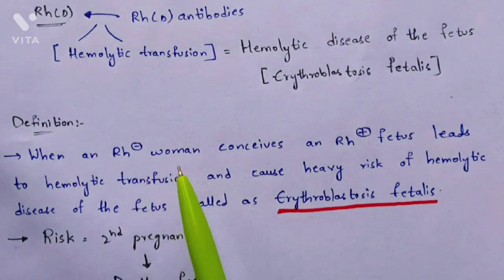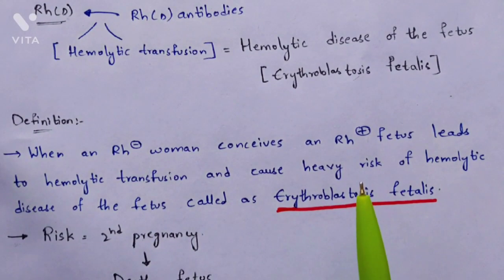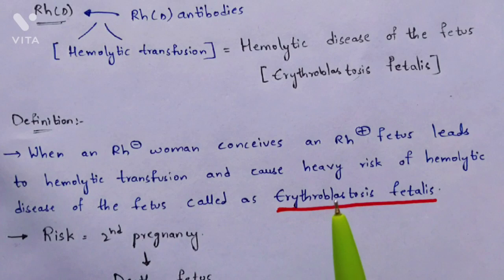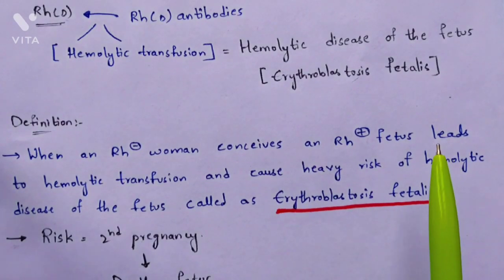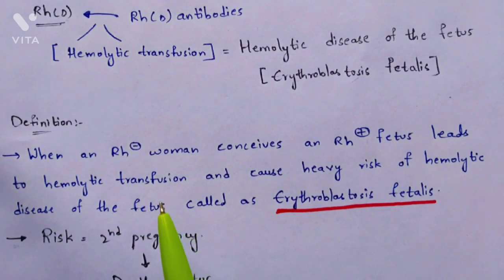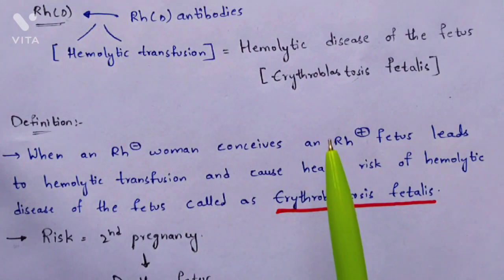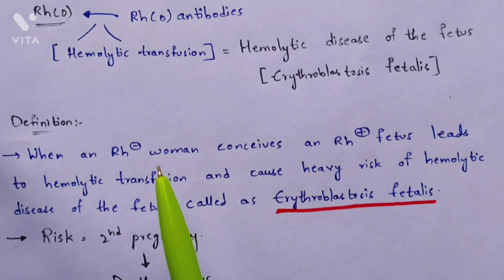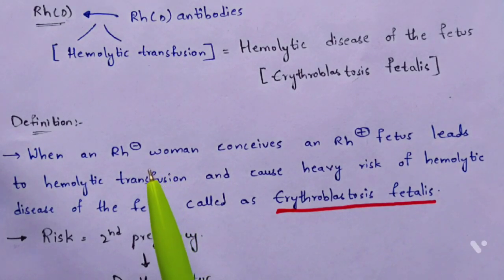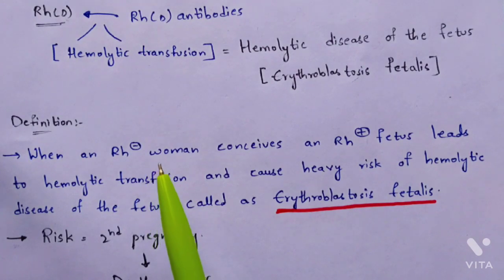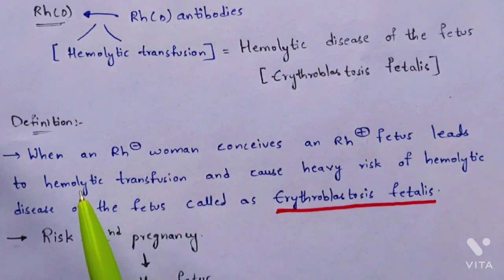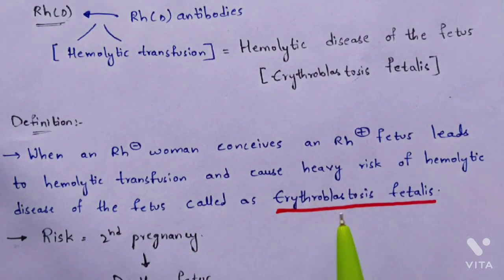The key scenario is when an Rh-negative woman conceives an Rh-positive fetus. The Rh-positive fetal blood enters the placenta, and because there is no antigen-antigen interaction — only antigen-antibody interaction — this leads to hemolytic transfusion and causes the hemolytic disease of the fetus called erythroblastosis fetalis.